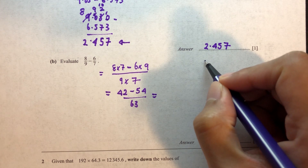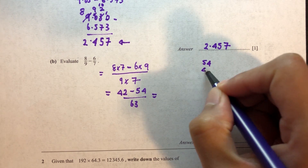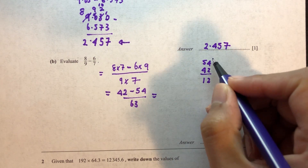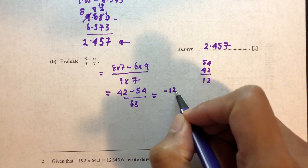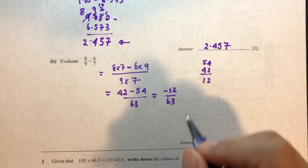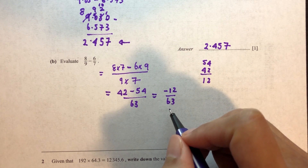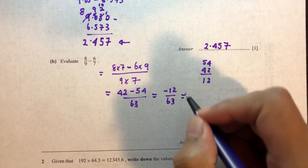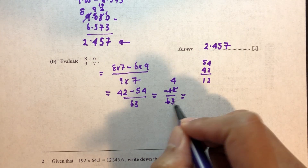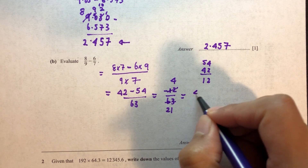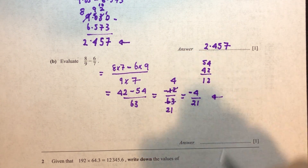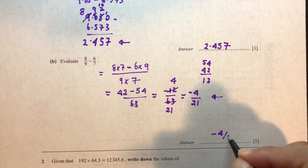So 42 minus 54 is minus 12 over 63. We can simplify by dividing by 3: minus 12 divided by 3 is minus 4, and 63 divided by 3 is 21. So the answer is minus 4 over 21.